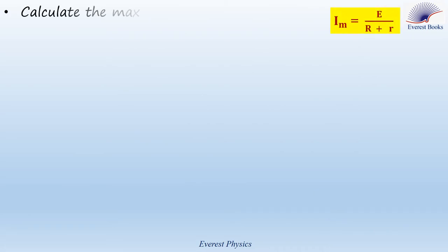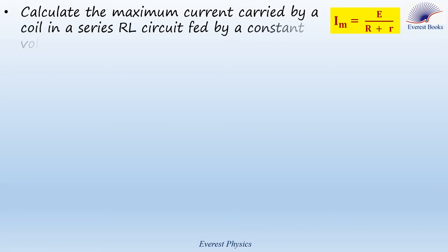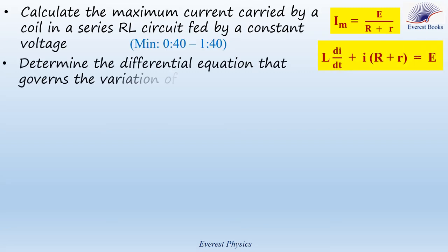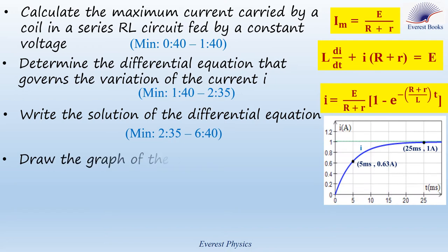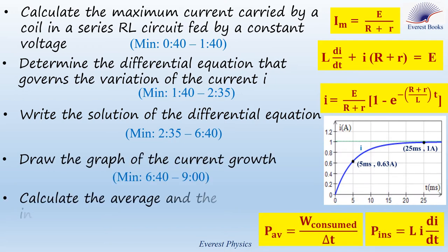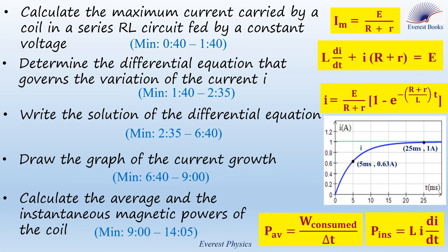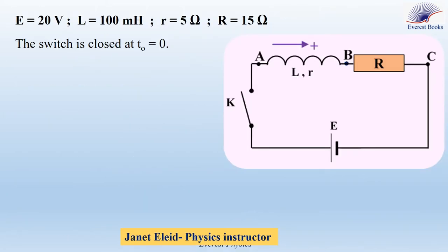In this video, we are going to calculate the maximum current carried by a coil in a series RL circuit fed by a constant voltage. We will determine the differential equation that governs the variation of the current I, write the solution of the differential equation, draw the graph of the current growth, and calculate the average and the instantaneous magnetic powers of the coil. The adjacent circuit includes an ideal battery of electromotive force 20 volts, a coil of inductance 100 millihenry and internal resistance 5 ohms, a resistor of resistance 15 ohms, and a switch and connecting wires.